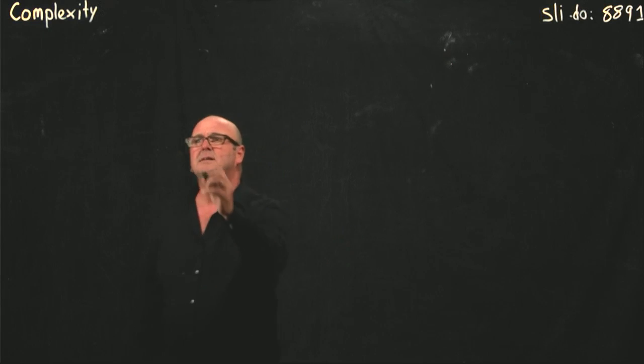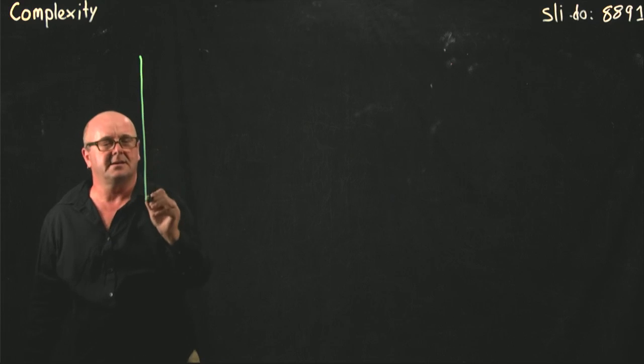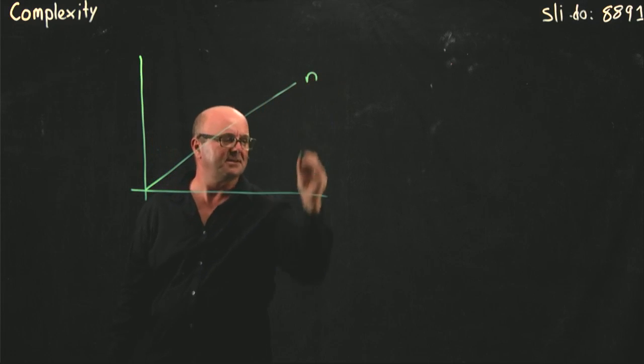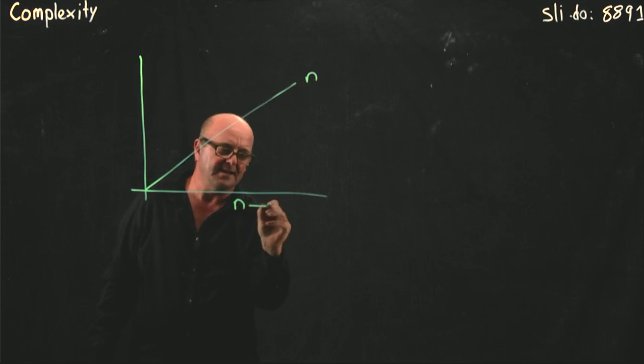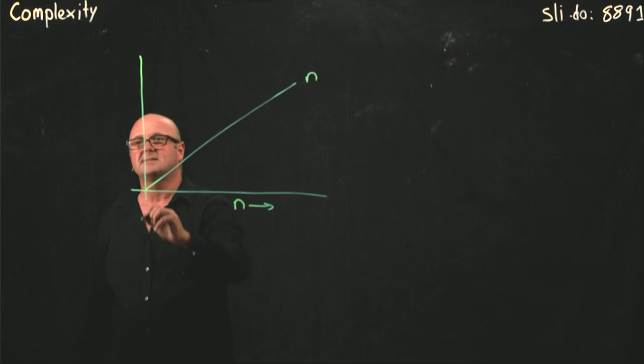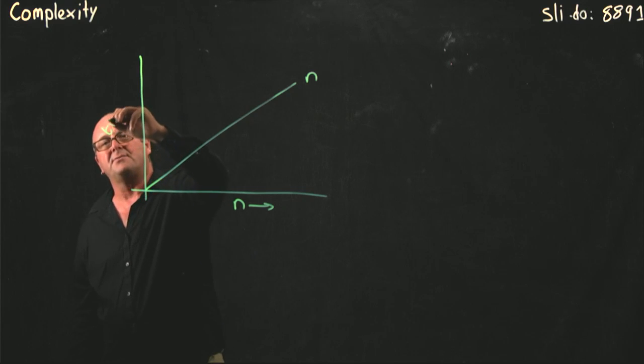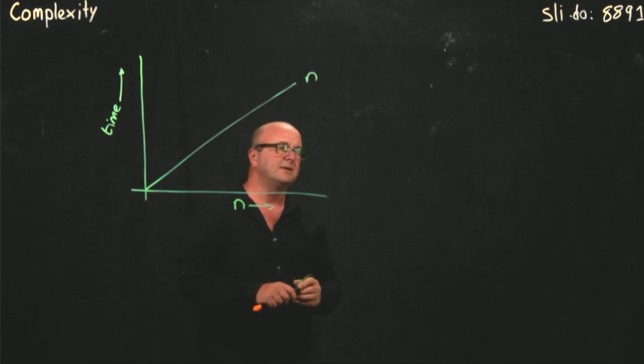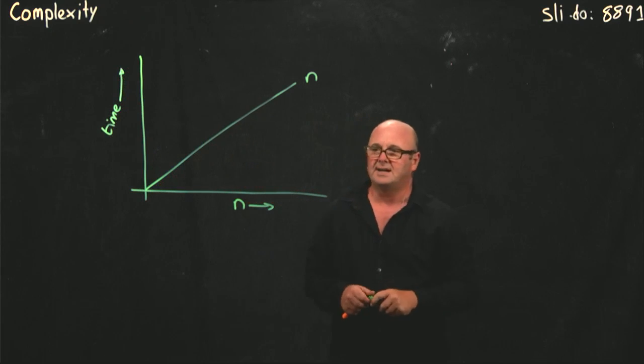We have our graph. Let's take another look at this graph. Here's an algorithm that looks like n. This is n increasing on the x-axis. And amount of work, amount of memory, amount of whatever increasing along the y-axis.